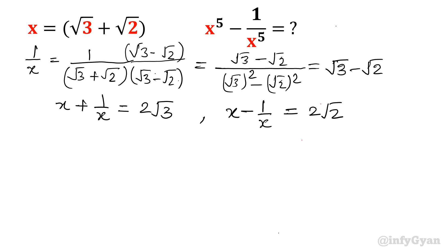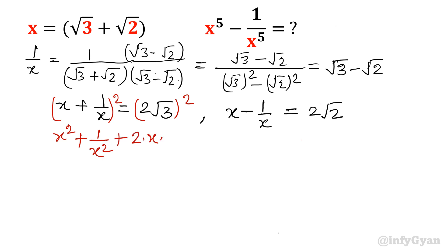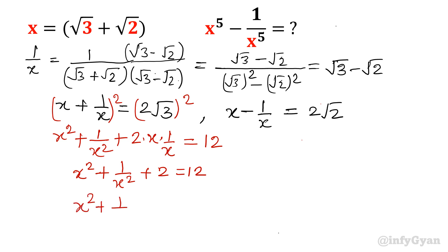Now I am going to take the square of x plus 1 over x. So (x + 1/x)² expands as x squared plus 1 over x squared plus 2 times x times 1 over x, which equals (2 root 3)² = 4 times 3 = 12. So x squared plus 1 over x squared plus 2 equals 12, meaning x squared plus 1 over x squared equals 10.